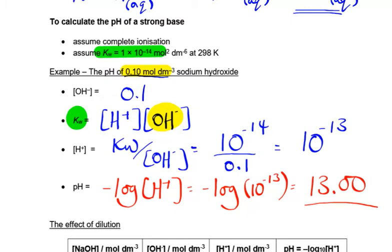pH is minus log of the hydrogen ion concentration, so that's minus log of 1×10⁻¹³, which comes out to be 13. For a strong alkali, we'd expect to see something like 12, 13, or 14, so that's looking good.